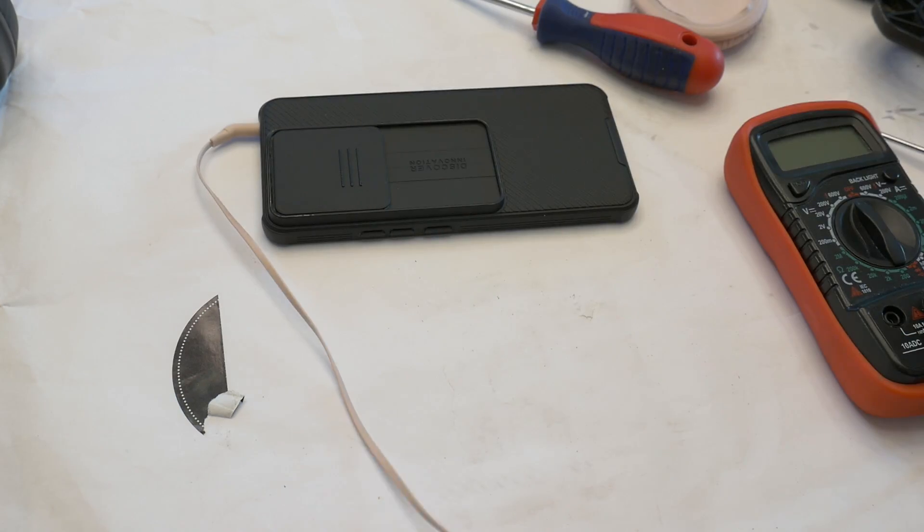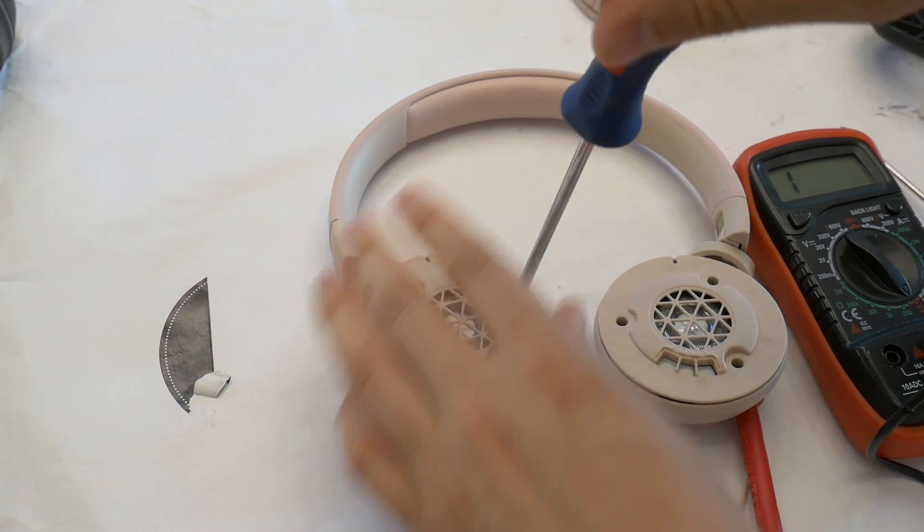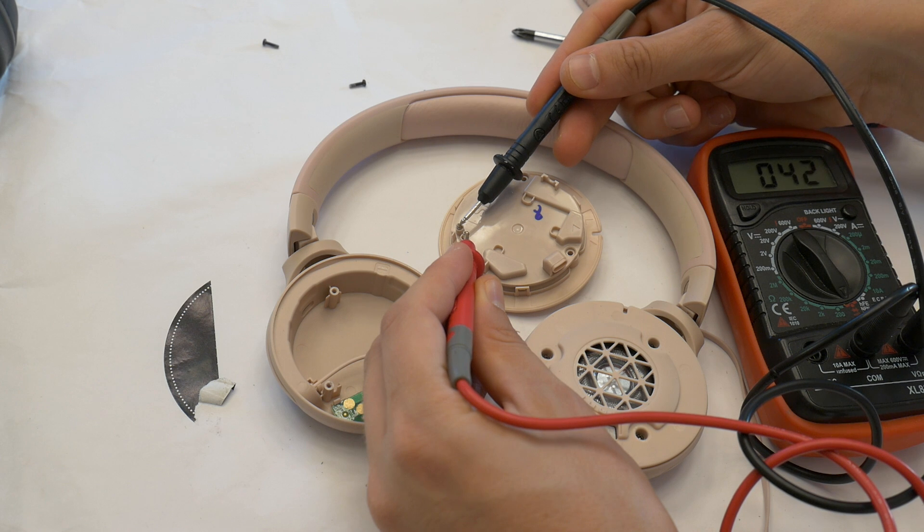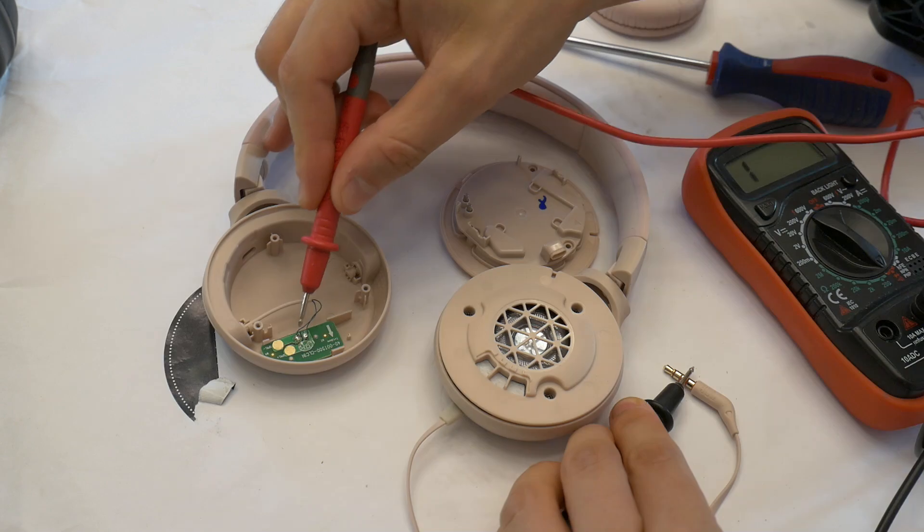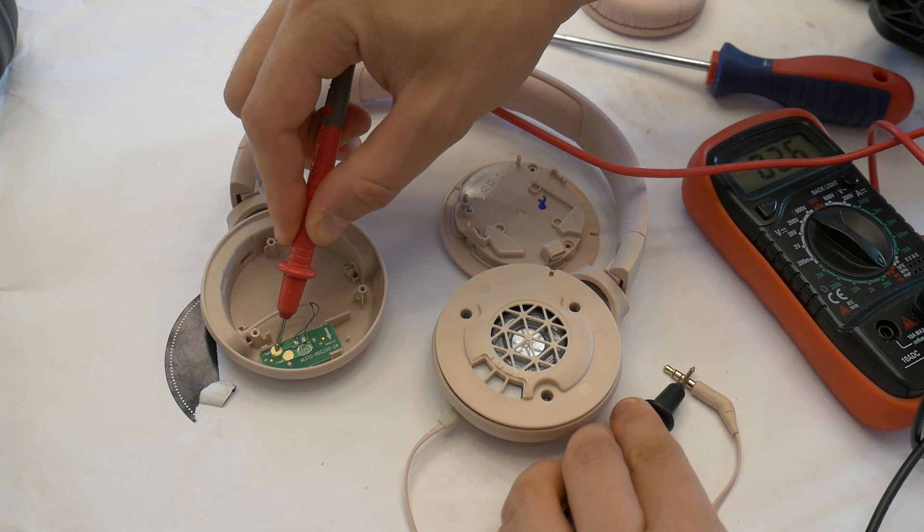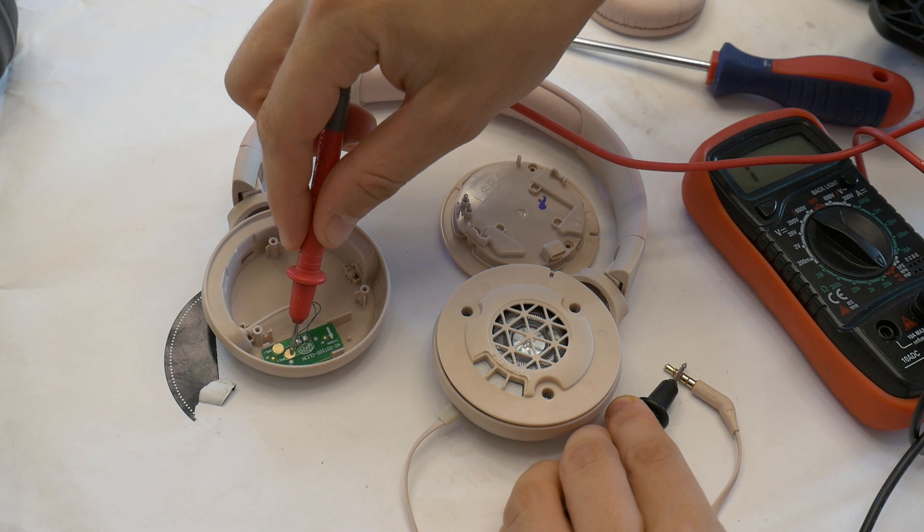In the same way, you can fix your headphones if the other side is faulty. Unscrew the headphone housing and check with multimeter resistance mode if the speaker driver is healthy. Then check if the wires are healthy from the 3.5mm jack to the board connectors where the speaker driver springs are attached.